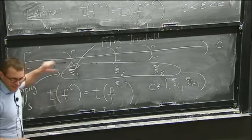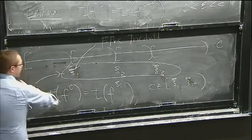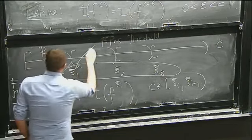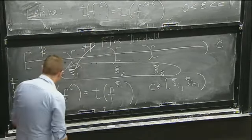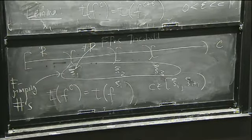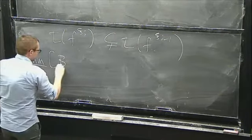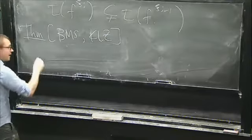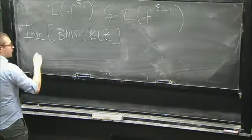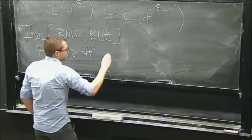So here the test ideal is trivial, and here the test ideal is non-trivial for the first time. The follow-up theorem says that the F-jumping numbers are actually discrete and rational. When it first jumps, you may get something which is not the maximal ideal — it may go from R to something which is not the maximal ideal.